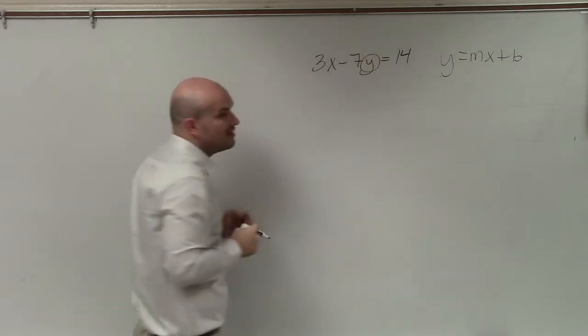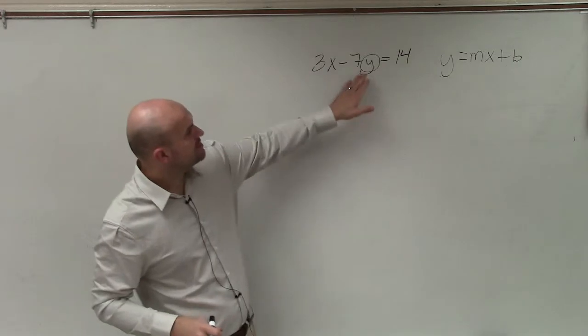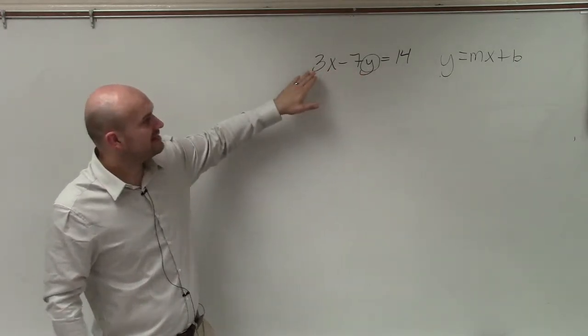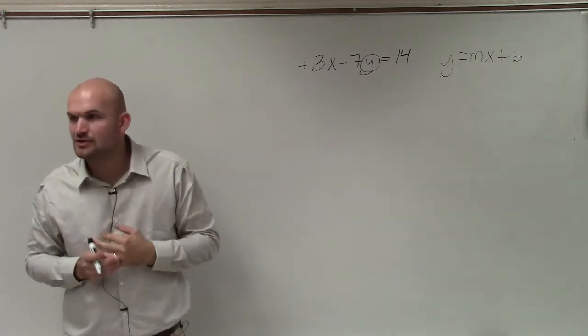A lot of times I like to circle the variable. And now I just need to identify what is happening to my variable. You can see my variable is being multiplied by negative 7 and is being added by 3x. That's a positive 3x.